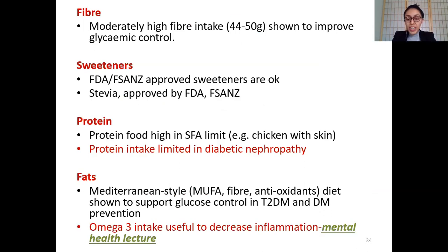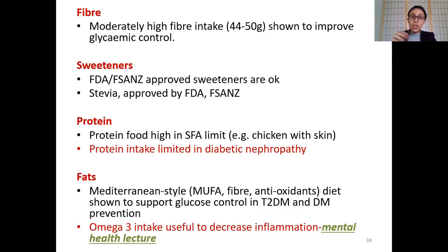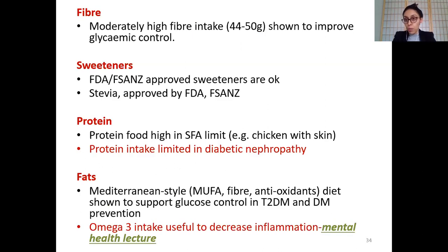Fiber has shown positive results with diabetes. A moderate fiber diet improves glycemic control because high-fiber foods cause a slow release of glucose into the blood. In a type 2 diabetic individual whose natural insulin secretion is limited, this slow release of glucose means their natural insulin can still manage the gradual glucose increase. FDA-approved sweeteners are acceptable; stevia is also approved as a natural sweetener, and erythritol from plants is also considered good.